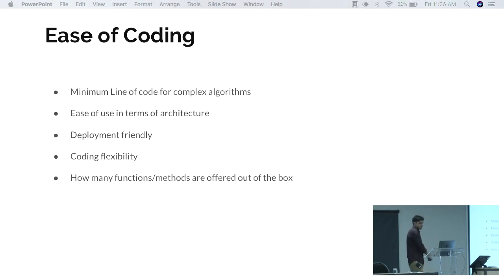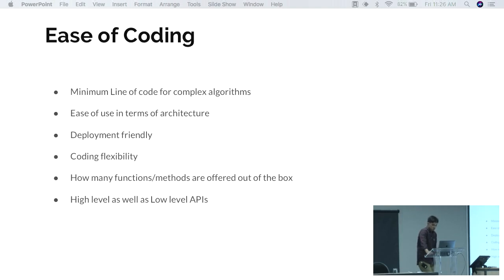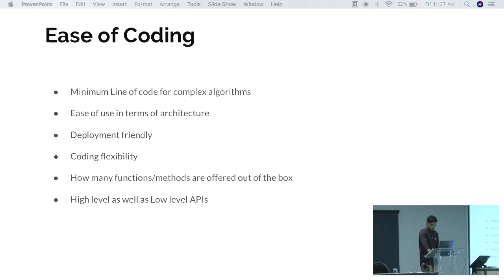Another factor is how many functions and methods are available out of the box, which enables fast development in minimum time. Finally, high-level as well as low-level APIs are important. Many developers are not expert coders and require high-level APIs so they can write code without worrying about memory management or coding complexity. Frameworks like TensorFlow provide both low-level libraries and high-level APIs for less experienced coders.